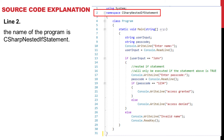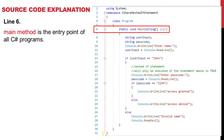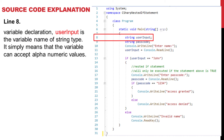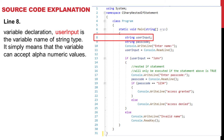Line 2: The name of the program is C-sharp nested if statement. Line 6: The main method is the entry point of all C-sharp programs. Line 8: Variable declaration — user input is the variable name of string type, which means the variable can accept alphanumeric values. Line 9: Another variable has been declared — passcode is the variable name of string type.